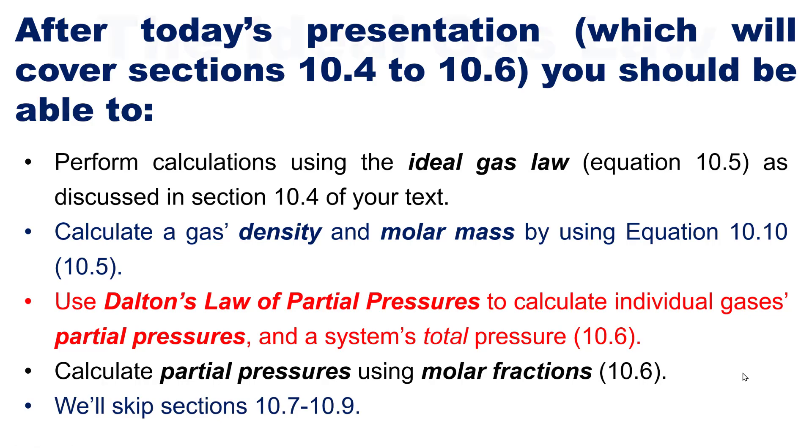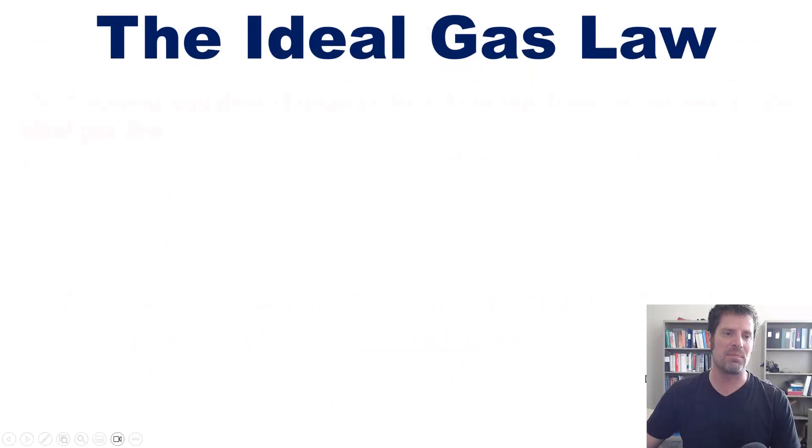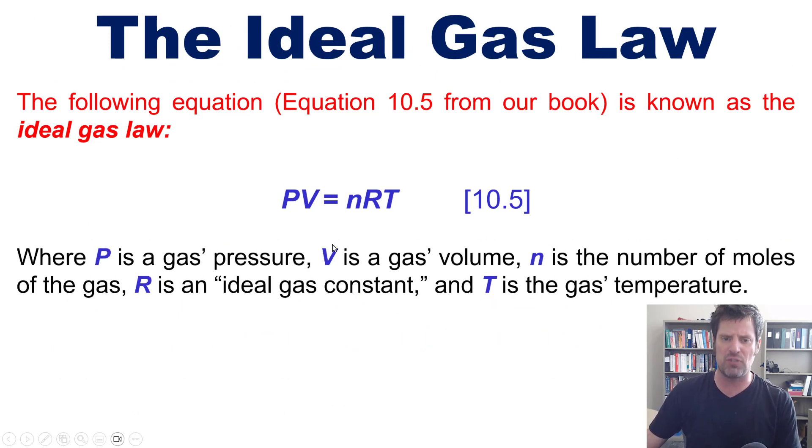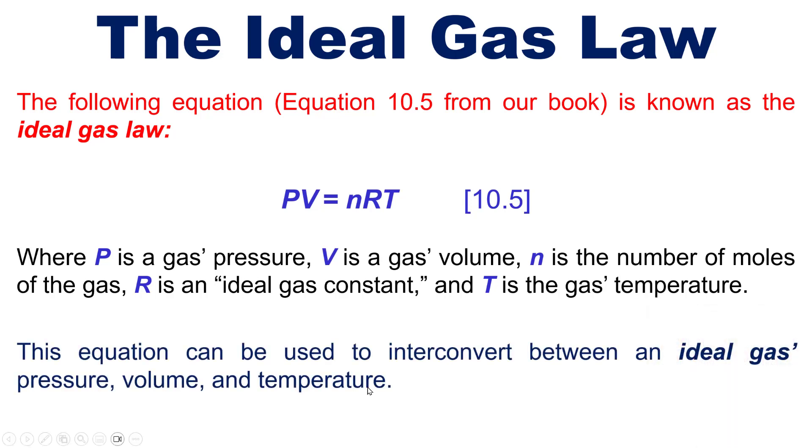So that's where we're going. Let's get into it, beginning with the ideal gas law. The following equation, which is taken from our text, is known as the ideal gas law, where P is a gas's pressure, V is its volume, n is its number of moles, R is the ideal gas constant, and T is the gas's temperature. Now this equation can be used to interconvert between an ideal gas's pressure, volume, and temperature.